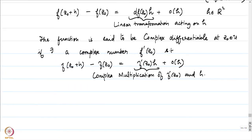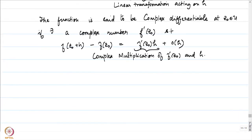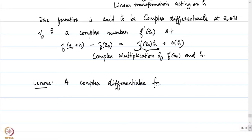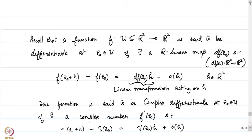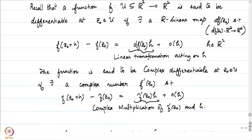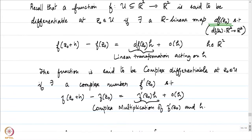Since we have an identification of C and R², we would like to ask: can we say anything about one notion implying the other? An immediate answer is that a complex differentiable function is always differentiable. Let me write that down as a lemma: a complex differentiable function is differentiable. The map df at z₀ is called the total derivative at z₀.